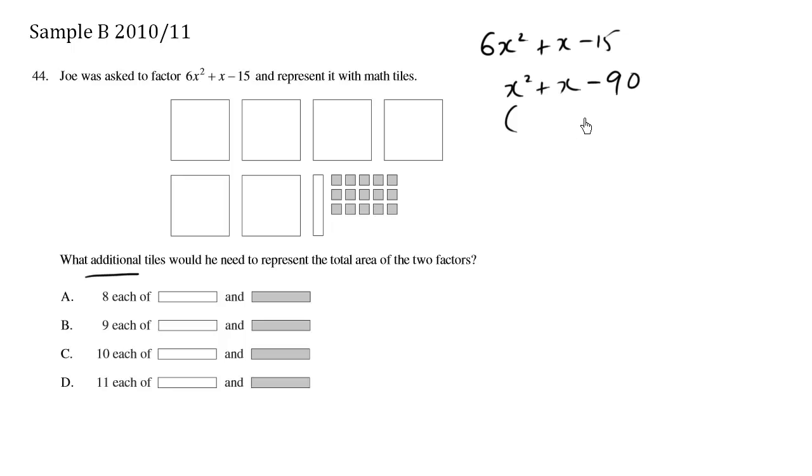And I'm going to just factor as normal. So we have x times x. What two numbers multiply to 90 yet add to be 1? Let's try plus 10 minus 9. 10 times negative 9 is negative 90. Positive 10, negative 9 makes 1. Positive 1.